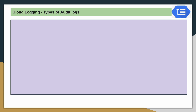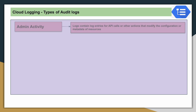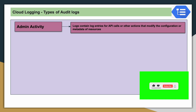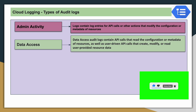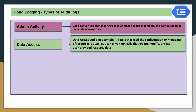Next we will see the different types of audit logs. Admin activity logs capture events like creating a Google Cloud resource, changing the state of a resource, or deleting a resource. Data access logs capture events when you are trying to access data from BigQuery — all those related entries are captured by the data access log.